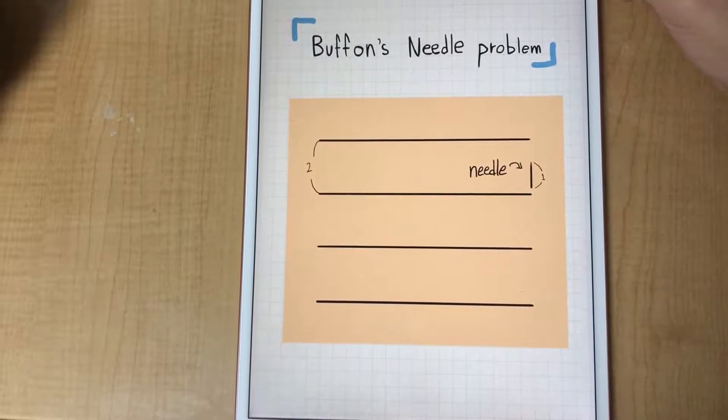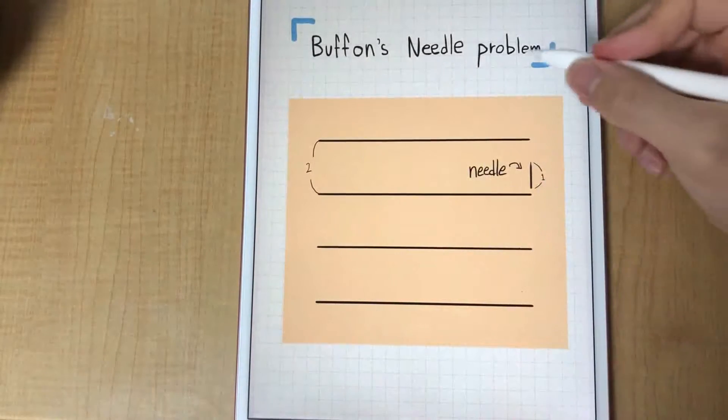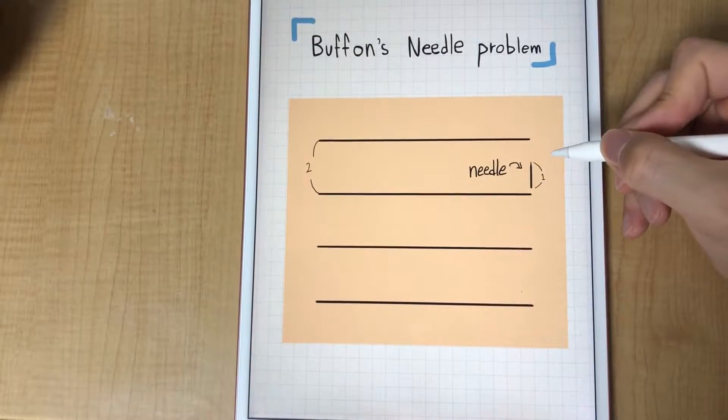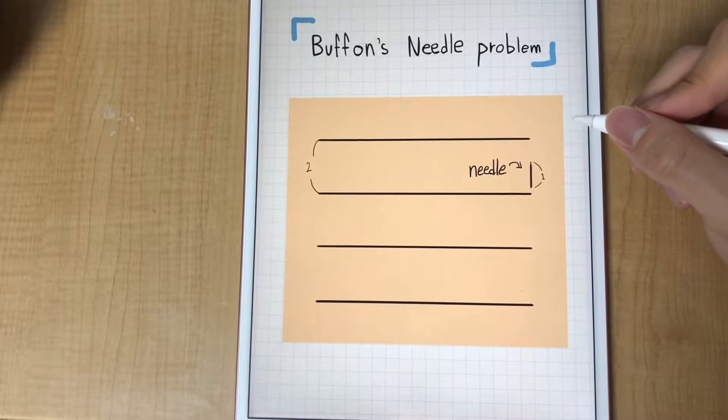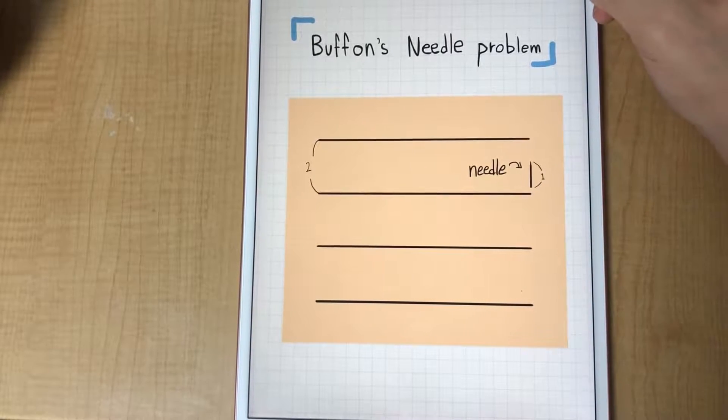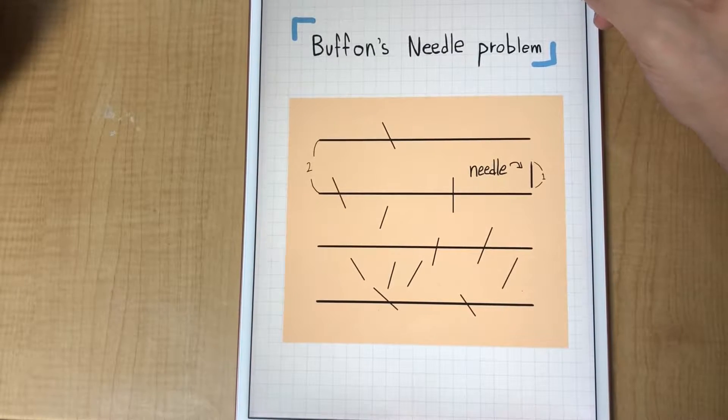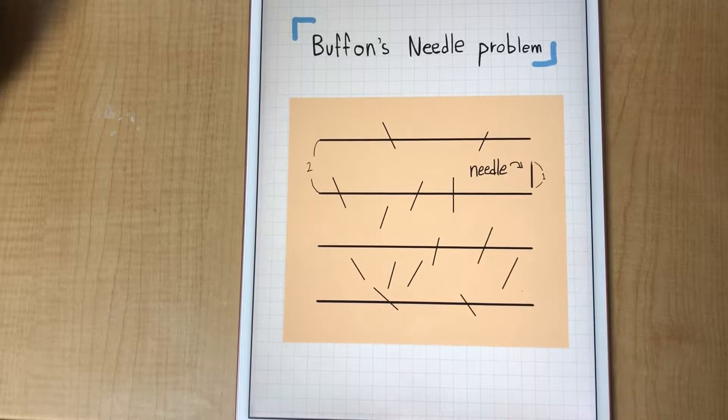The Buffon's needle problem. There is a plane with many parallel lines spaced two units apart. On this, you randomly throw needles which are one unit long. What is the probability a needle would cross one of the lines? Seems like a simple question, and if you follow carefully, you'll arrive at an interesting answer.